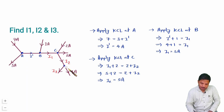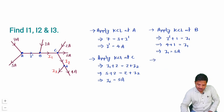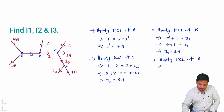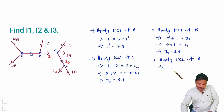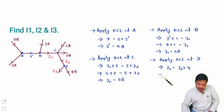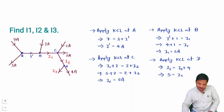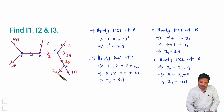Now considering node D and applying KCL: entering current is I2 and leaving currents are I3 and 4 amperes. So I2 = I3 + 4. We already calculated I2 = 5 amperes, so 5 = I3 + 4, giving I3 = 5 − 4 = 1 ampere. So now we have the values of I1, I2, and I3.